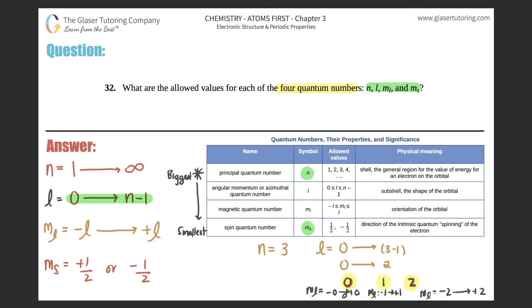If you wanted to talk about a specific ms off of an ml, if we wanted to talk about the negative two, the ms you would either say negative one half or positive one half. It's just as easy as that.